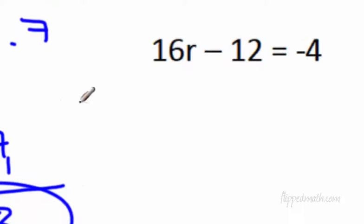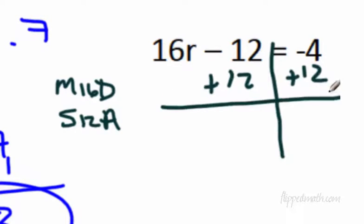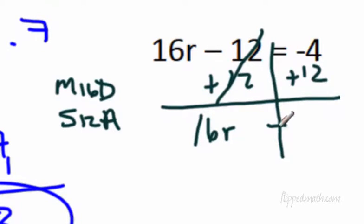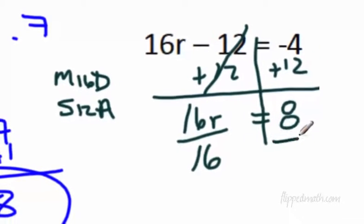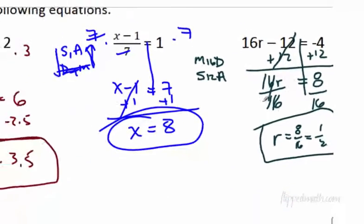Last example of this type: 16r minus 12 equals negative 4. If we plug in for r, we first multiply by 16 and then subtract 12. The opposite of subtracting 12 is adding 12; the opposite of multiplying by 16 is dividing by 16. We add 12 to each side — being careful with integers. 16r comes down, the subtract 12 and add 12 cancel, and negative 4 plus 12 is 8. Now we divide both sides by 16. We get r equals 8 over 16, which is one half.